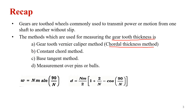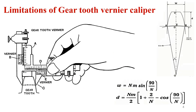We have four different methods for measuring the gear tooth thickness: one is the gear tooth vernier caliper method, another is the constant chord method, then the base tangent method, and measurement over pins or rollers. We derived the chordal thickness W = nM sin(90/n), and the chordal addendum D = nM/2 × (1 + 2/n − cos(90/n)). These are the two derivations done in Lecture 4, and then we saw the limitations of the gear tooth vernier caliper.